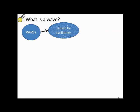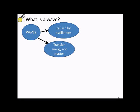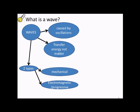So first up, waves themselves. Waves are simple oscillations, and they transfer energy, but they don't transfer particles or matter. So there's two types: mechanical and electromagnetic, or progressive waves.